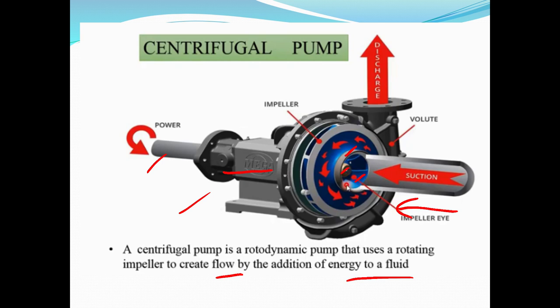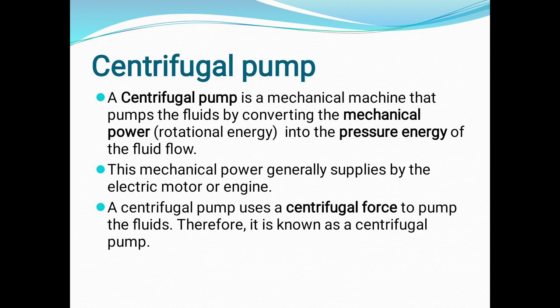In the centrifugal pump, we will enter a circular disk. We will connect a shaft with the impeller. Electrical energy is supplied to the shaft. The rotation is mechanical — the impeller is mechanical. We rotate the circular disk with centrifugal force and create rotational force in the water. This is a mechanical machine that pumps fluid by converting mechanical power into the pressure energy of fluid flow.